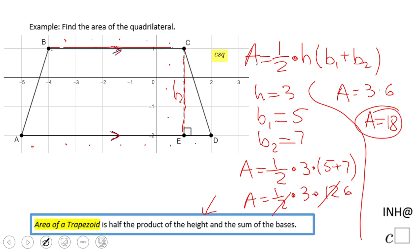Whenever you have a rectangular grid, use it, count, and you're going to find everything you need. So we have h—in this case, the height was three. b₁, the first base, was five. And the second base was seven. And we just counted.